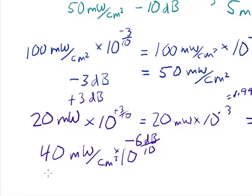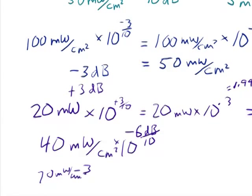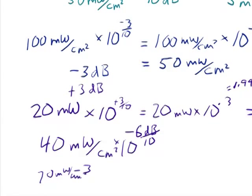But really I know that for every 3 decibels, it cuts in half. So applying minus 3 decibels, it goes to 20 milliwatts per square centimeter. And then when I apply the next 3 decibels to come up to, to get it all the way to 6 decibels, it's down to 10 milliwatts per square centimeter.